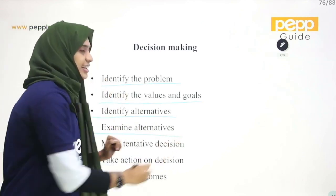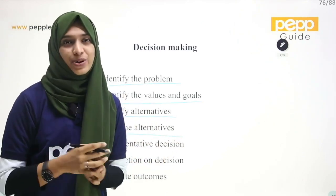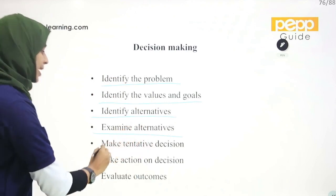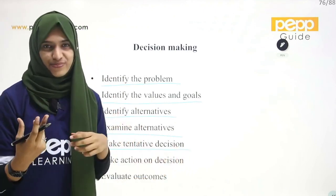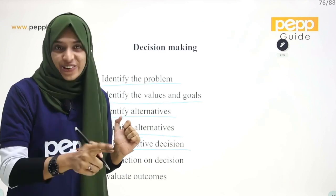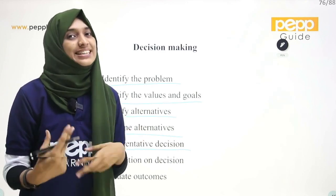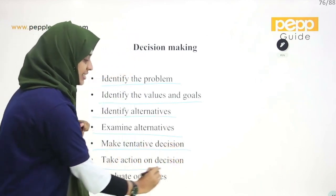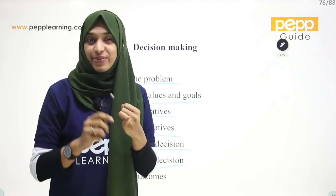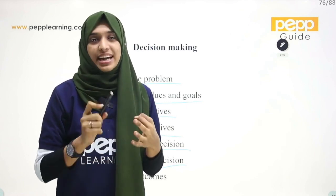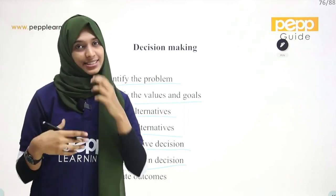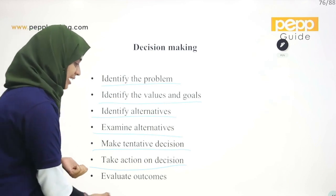Then examine the alternatives — we need to work them out. Then make a tentative decision. Take action on that decision — go and join a coaching center. Then evaluate the outcome.